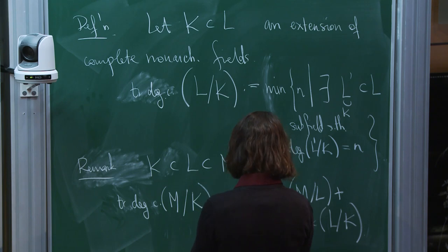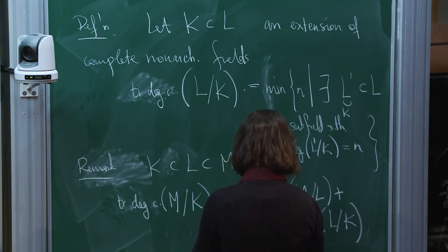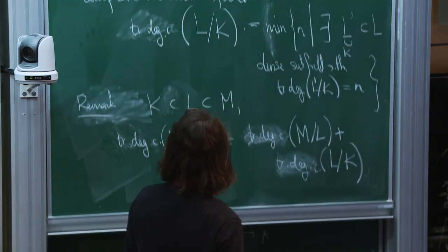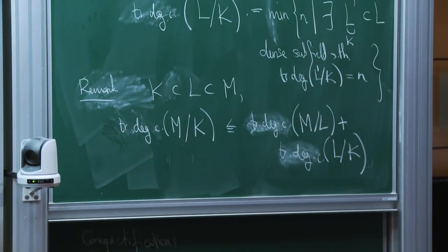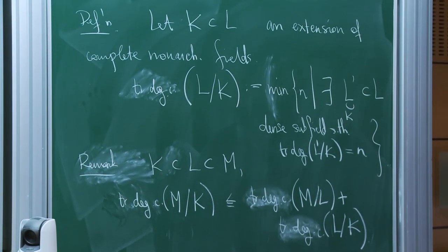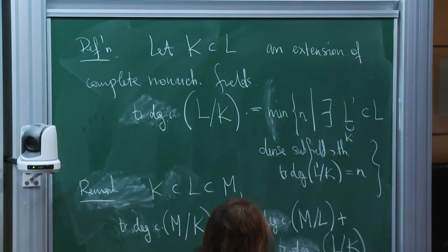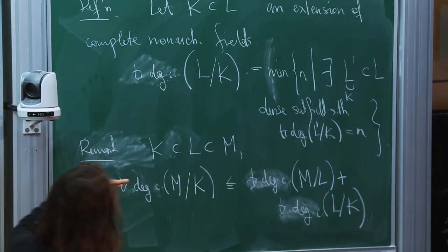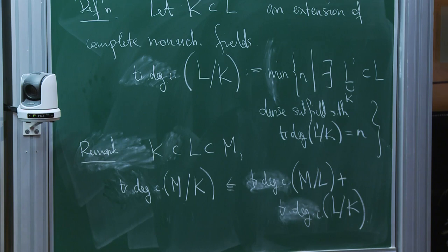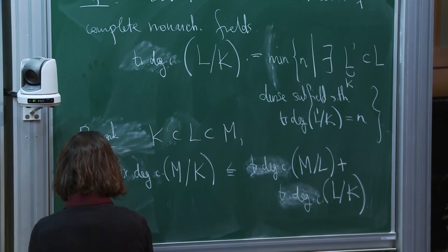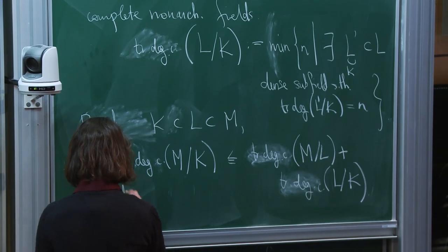This is a slightly tricky definition. What is true is the following sub-additivity: if k ⊂ l ⊂ m, then the continuous transcendence degree of m over k is at most the sum of the continuous transcendence degree of l over k plus the continuous transcendence degree of m over l.